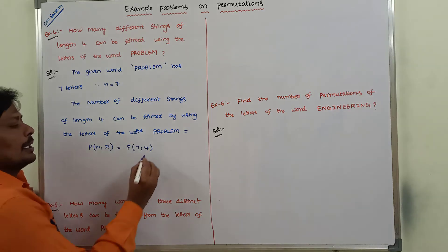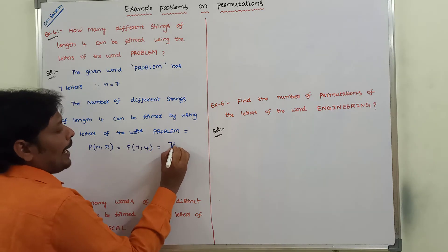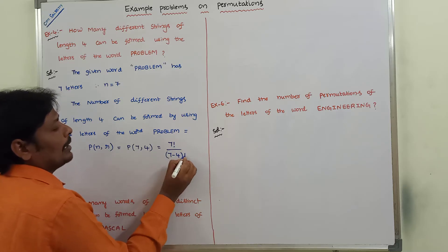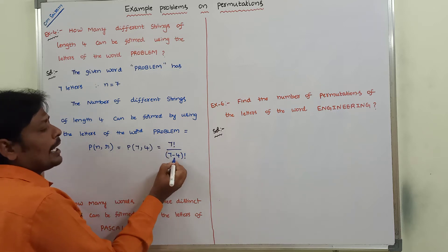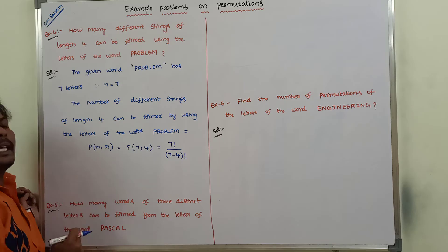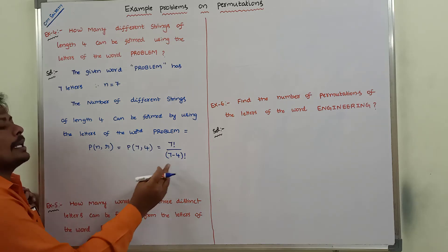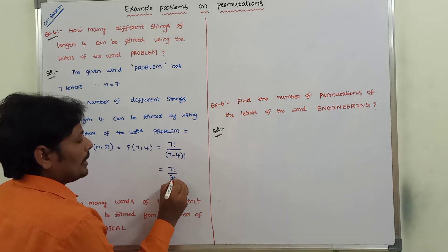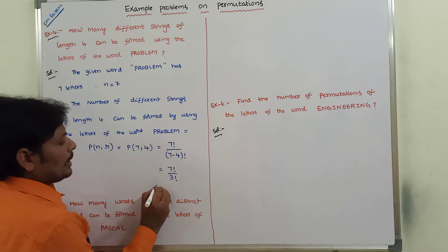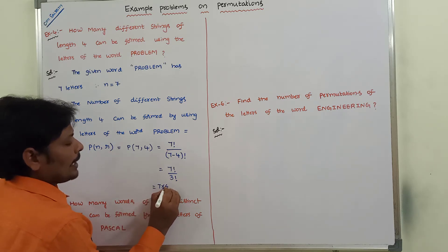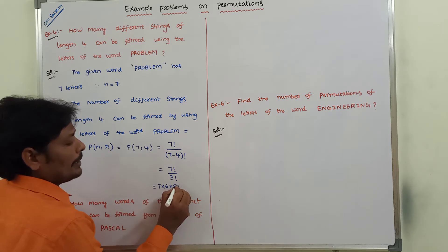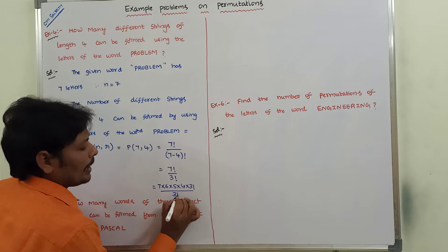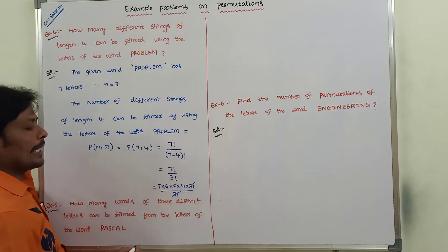P of seven comma four is equal to seven factorial divided by seven minus four factorial. So that is equal to seven factorial divided by three factorial. That is seven into six into five into four into three factorial, divided by three factorial. Three factorial cancels.